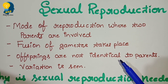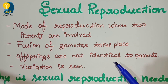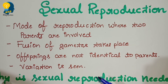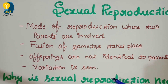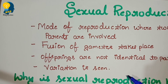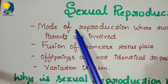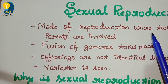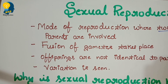You have already understood about asexual mode of reproduction in the previous sessions. So first, what is sexual reproduction? How can we define it? It is a mode of reproduction. Sexual reproduction is a mode of reproduction where two parents are involved.